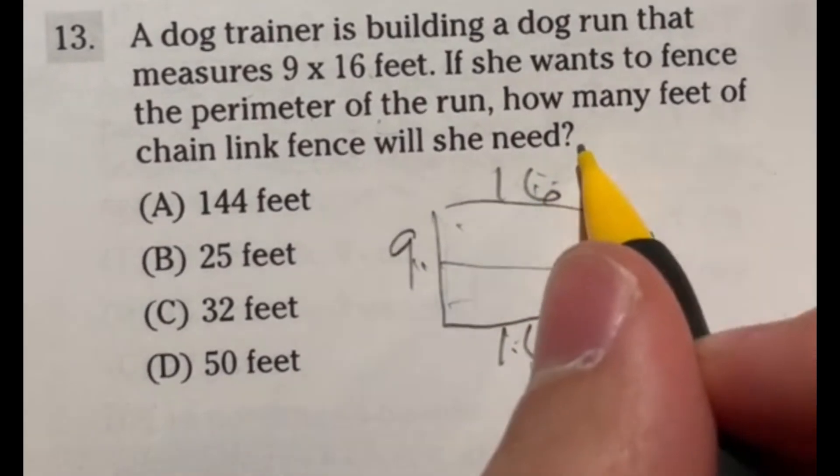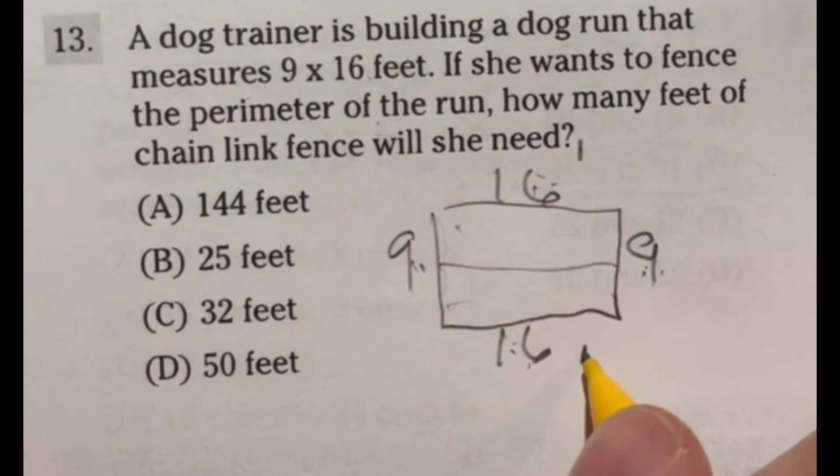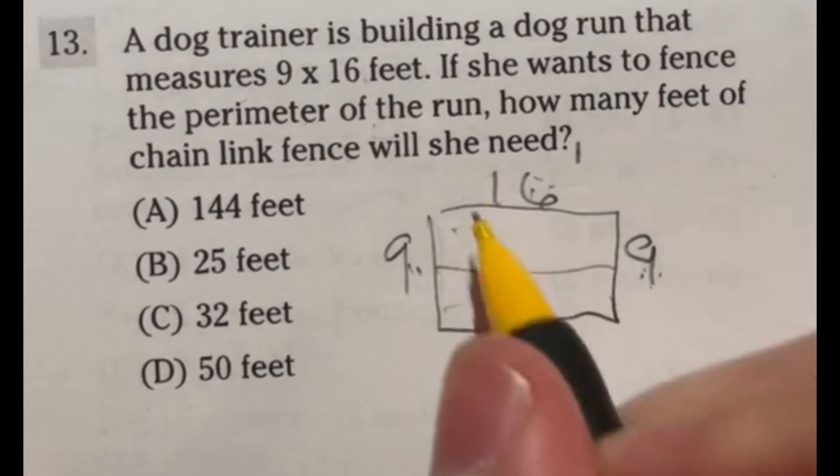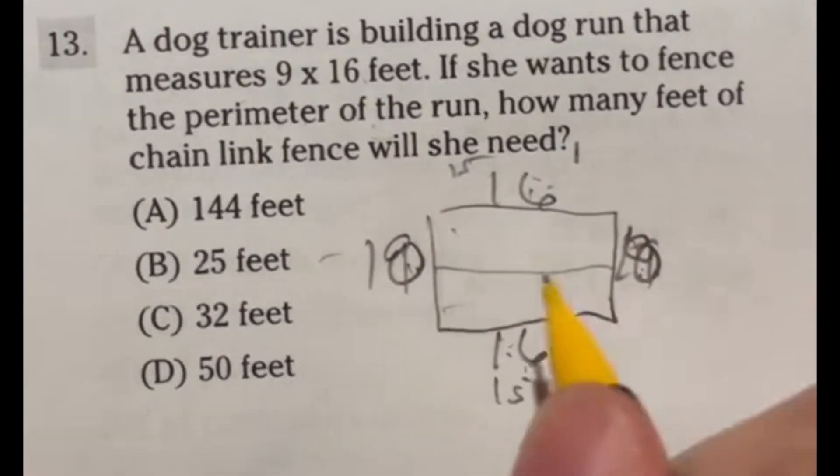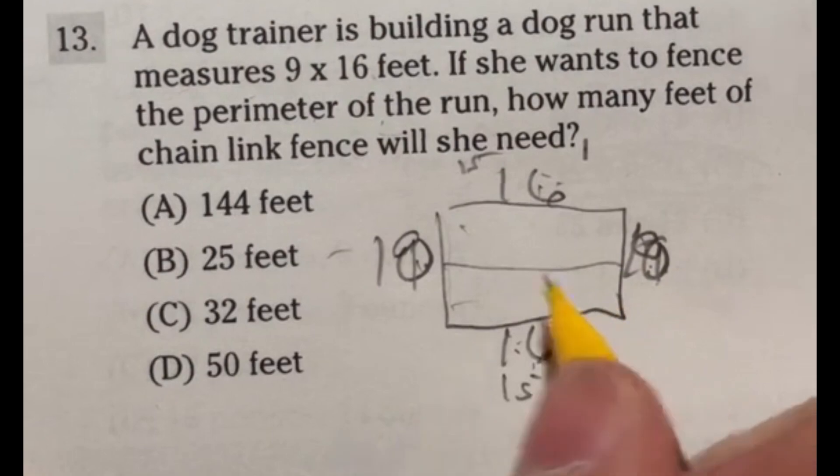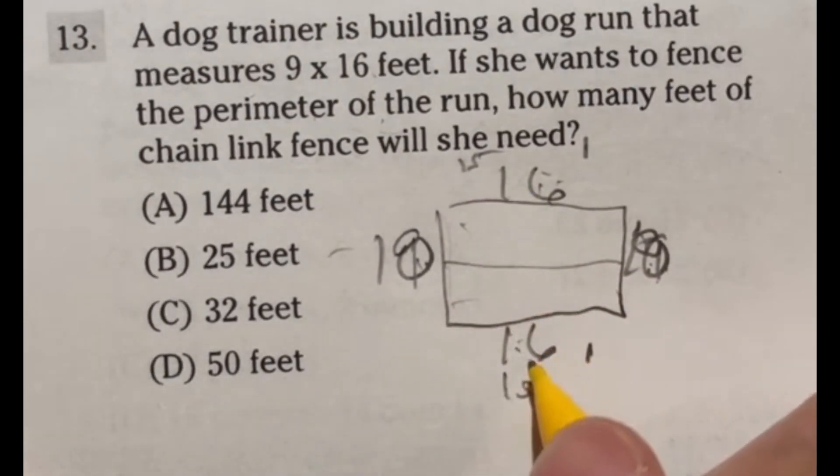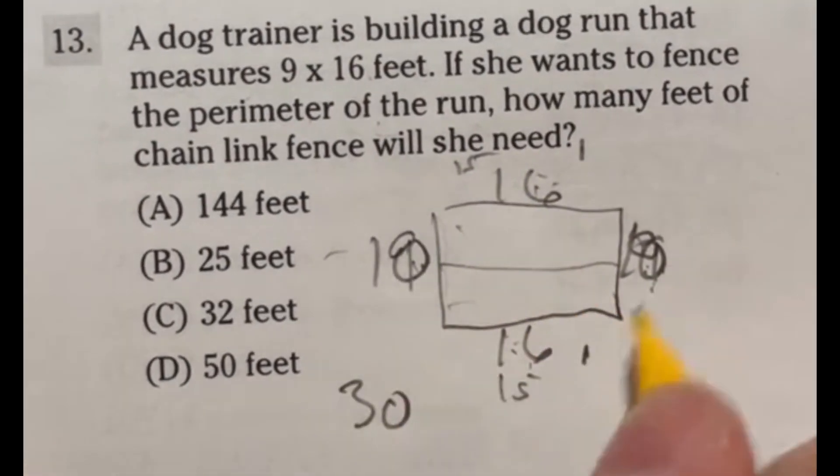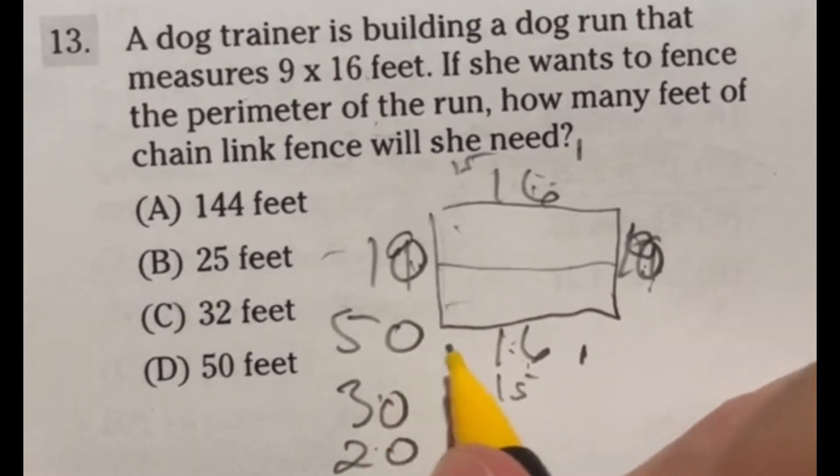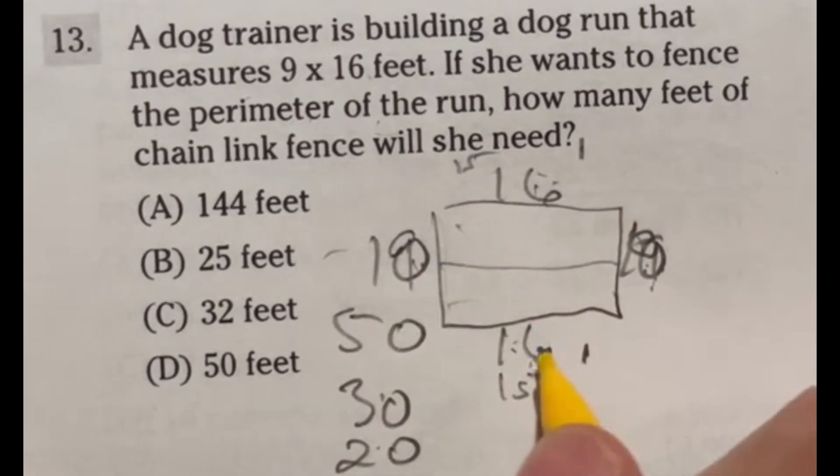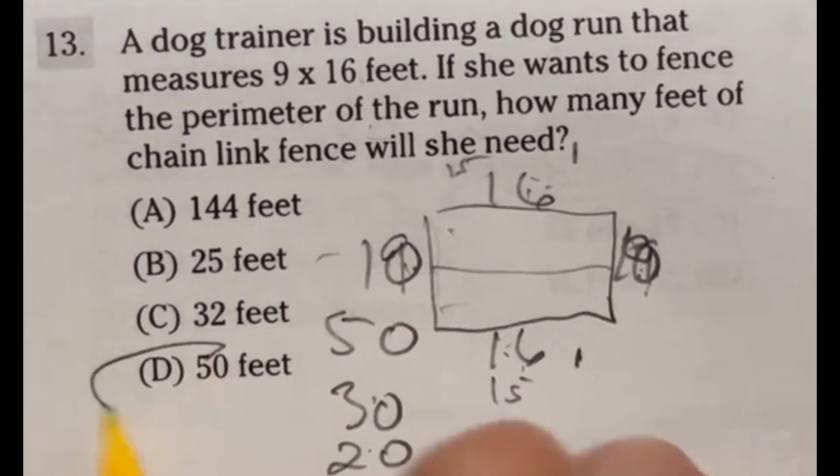So essentially, we just need to add these four numbers together. I'm going to take 1 from this guy and 1 from this guy to make this 15 and 15 to give me an even 10 right here and an even 10 right here. That way I can add these up a little bit quicker because 15 plus 15 is 30, 10 and 10 is 20, and 30 plus 20 gives me a total of 50. So we're looking at 50 feet of fence here, which means our answer is D.